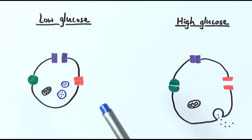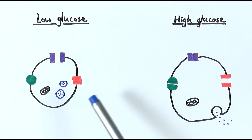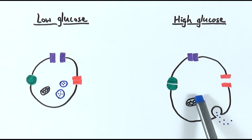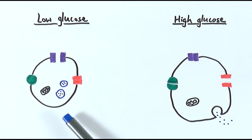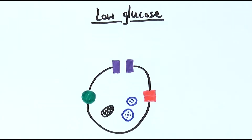We'll look at two different situations: when there is a low glucose level and when there is a high glucose level. First, let's look at the resting state, which is basically when there is a low blood glucose level.